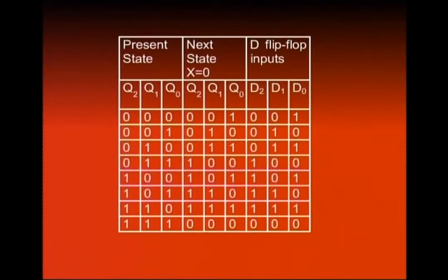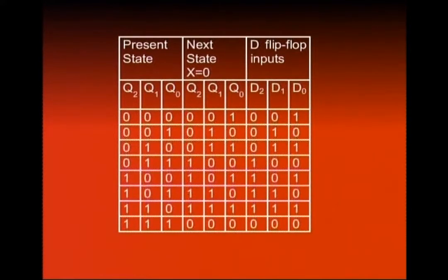D flip-flop ka input table dikhaya gaya — when the external input X is equal to 0. Jab humne 3-bit up and down counter banaya tha using JK flip-flops, ek external input X use kiya tha. Jab X 0 hota hai toh 3-bit counter up count karta hai, aur jab X 1 hota hai toh down count karta hai. Present states Q0, Q1, Q2 — 000 se lekar 111 tak hain. Next state jab X=0 hai toh increment ho rahi hai. For initial state 000, next state is 001. Aakhri state 111 — X 0 hai — cycle hokar 000 pe aa gaya.